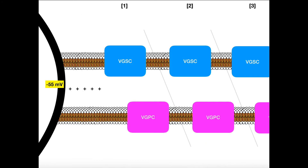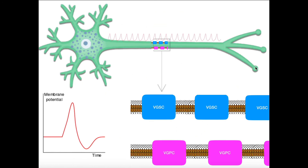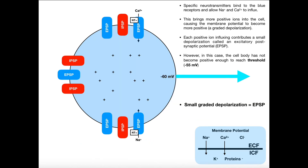Quick recap — make sure you understand two things. First, how the action potential propagates down the axon: it's due to consecutive, unidirectional openings of voltage-gated sodium channels in sequence. Second, in each individual region, opening of voltage-gated sodium channels depolarizes the membrane to about positive 30; they close, then voltage-gated potassium channels open and repolarize back to resting membrane potential of negative 70, with a slight overshoot into hyperpolarization. Upcoming videos will cover the sodium-potassium ATPase, decremental conduction, and neurotransmitter exocytosis at the axon terminals.